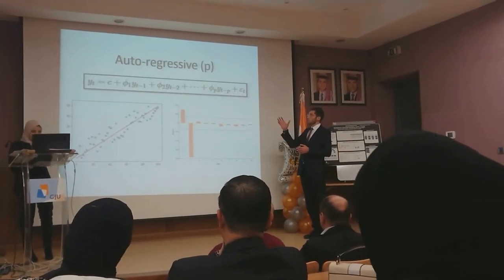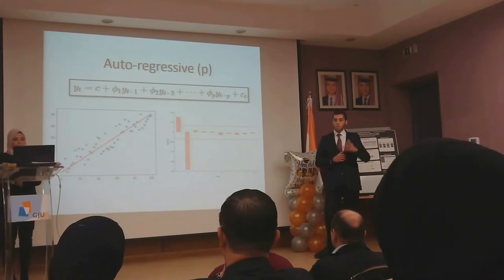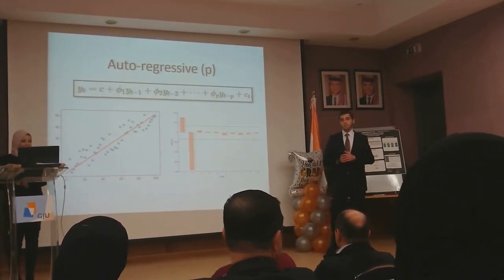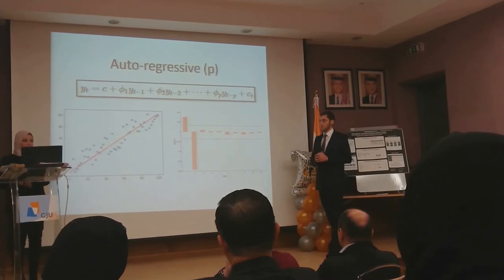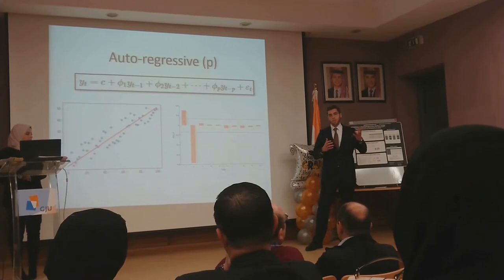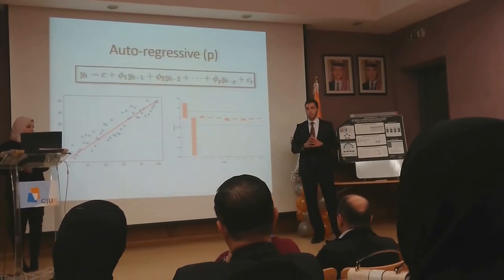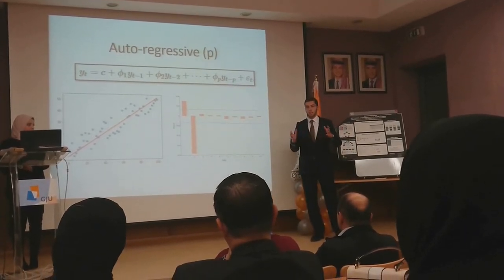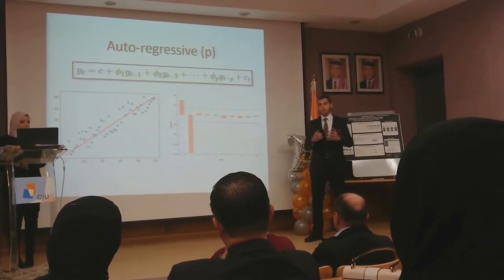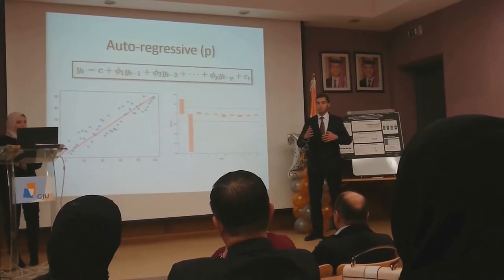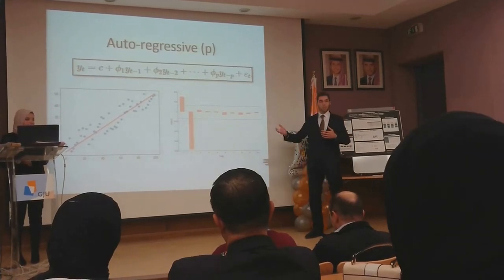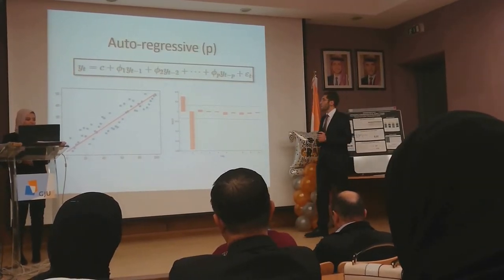We start with the autoregressive part. We should not confuse this with regression from our applied statistics course. Regression is basically when we study the correlation between an independent variable and a dependent variable — for example, an independent variable could be the temperature of the weather, while a dependent variable could be the sales of bottled water, allowing us to perform predictions on those sales.